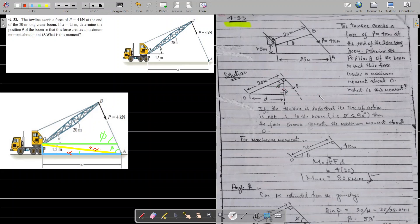By this assumption, we can calculate the maximum moment as F into d. F is 4 kilonewtons and d is 20 meters, and the angle between force and moment arm is 90 degrees. We get the maximum moment is 80 kilonewton meters. Now the next step is to calculate what will be the theta at this maximum.